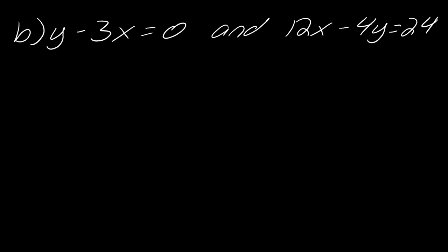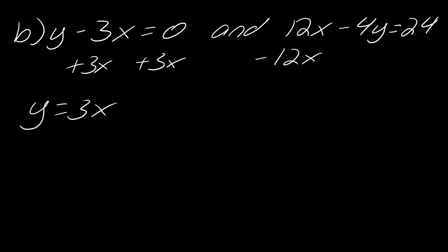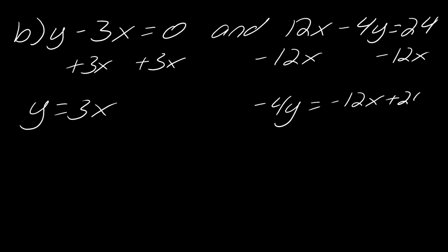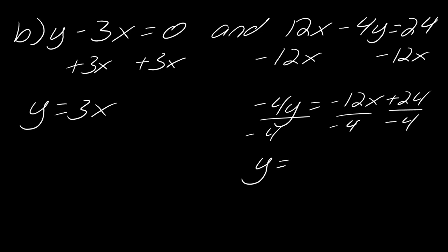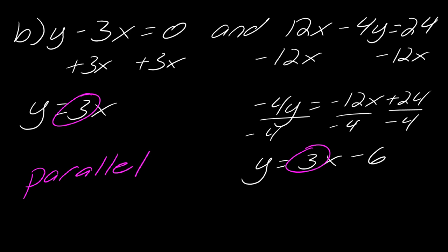Now for the next problem. I'll solve for y in each equation. For y minus three x equals zero, I add three x to each side to get y equals three x, so the slope is three. For the other equation, I subtract twelve x from each side to get negative four y equals negative twelve x plus twenty-four, then divide by negative four to get y equals three x minus six, slope three. Both slopes are three, which means these are parallel lines.